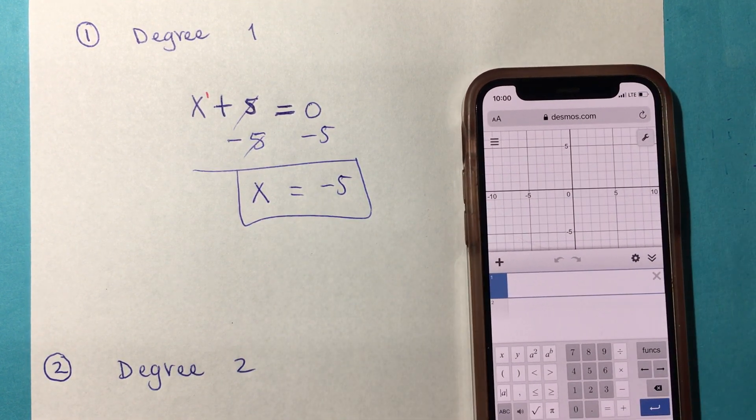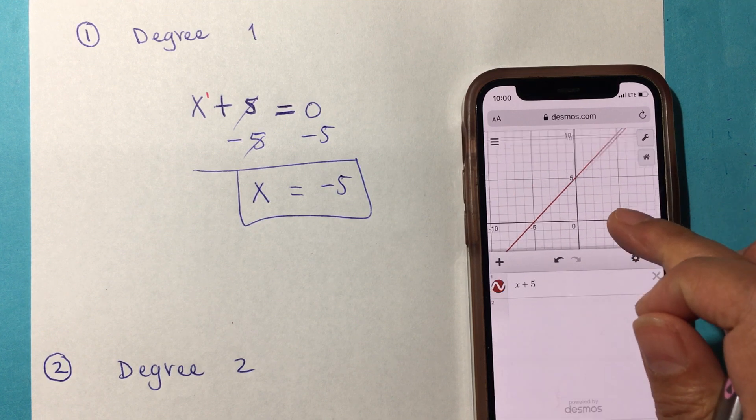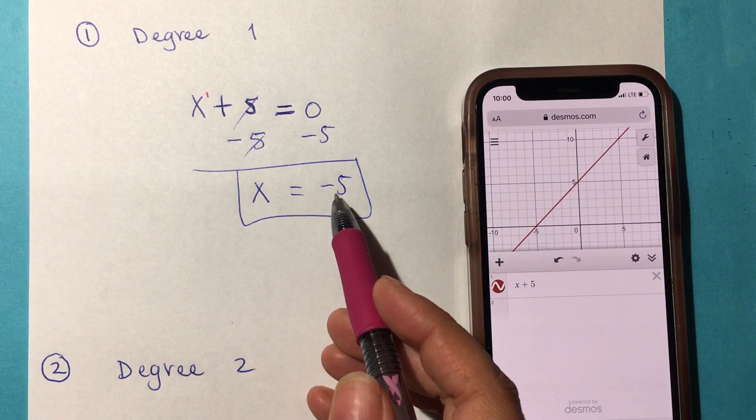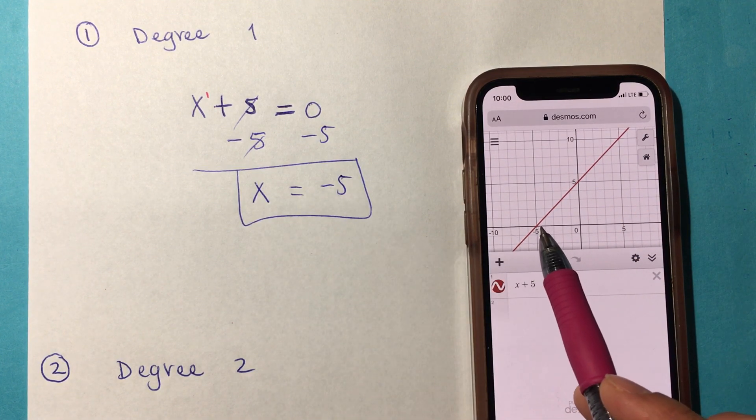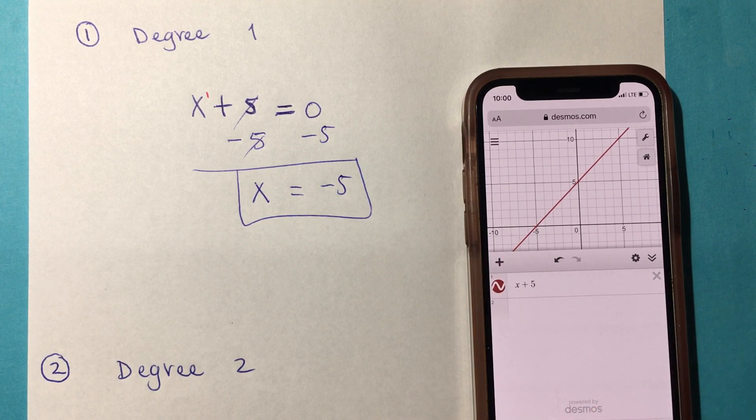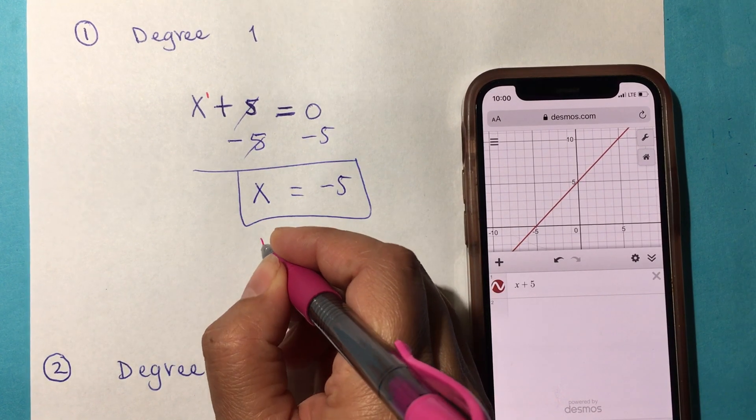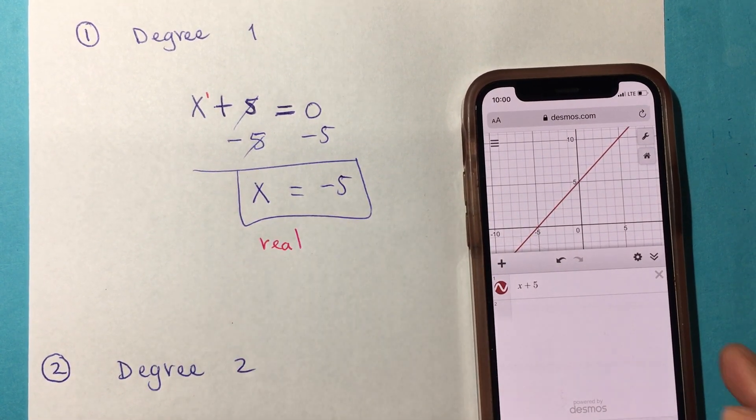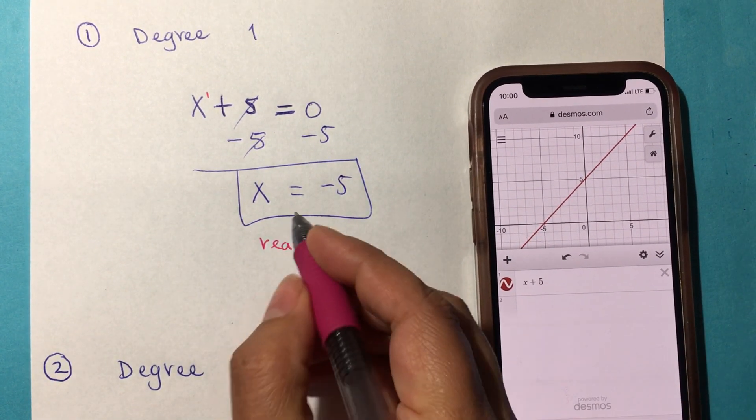If we were to graph x + 5, look at the solution. The solution is x equals negative 5. That's where the line intersects the x-axis. That's a real component, a real solution or real root.